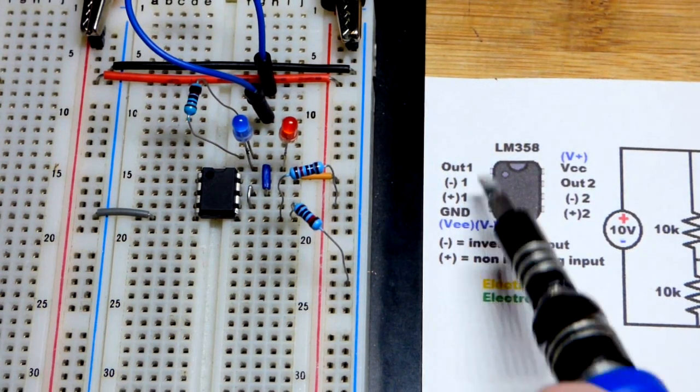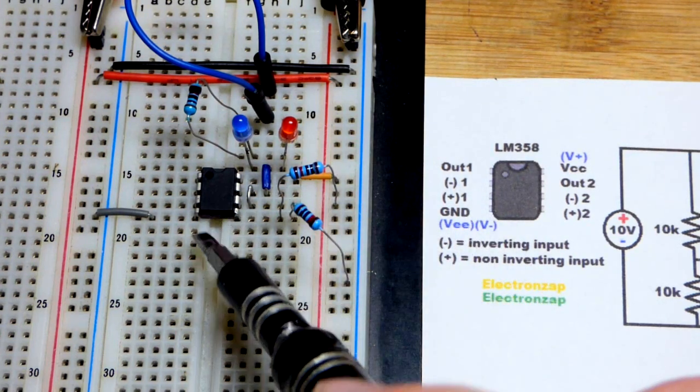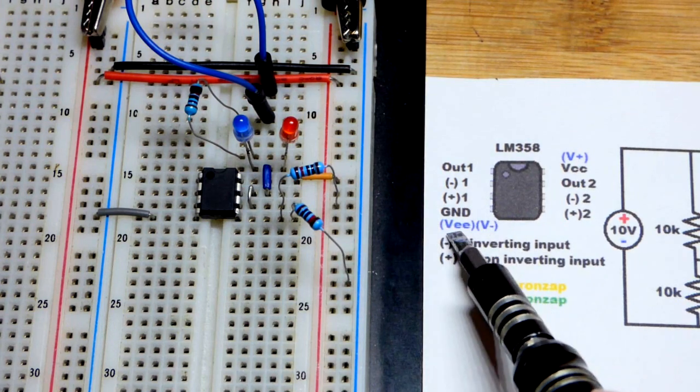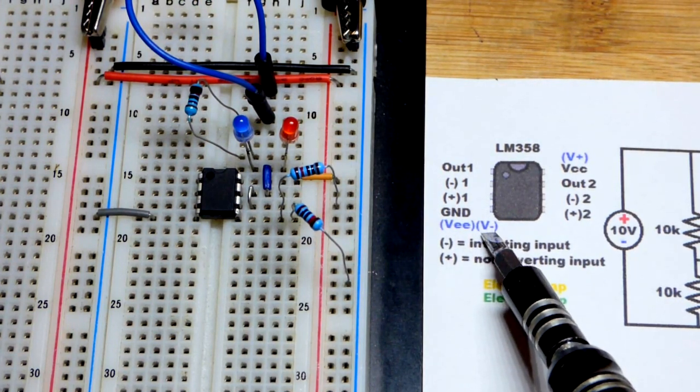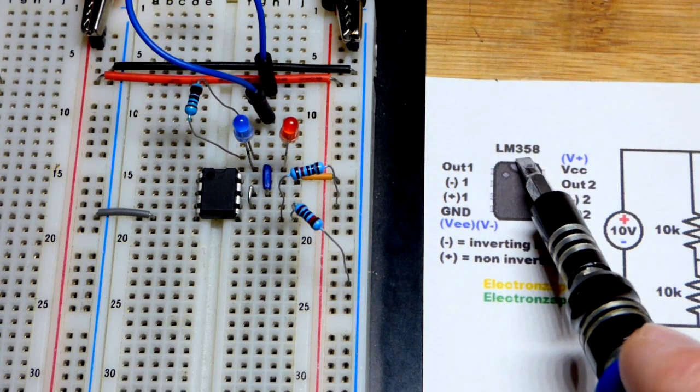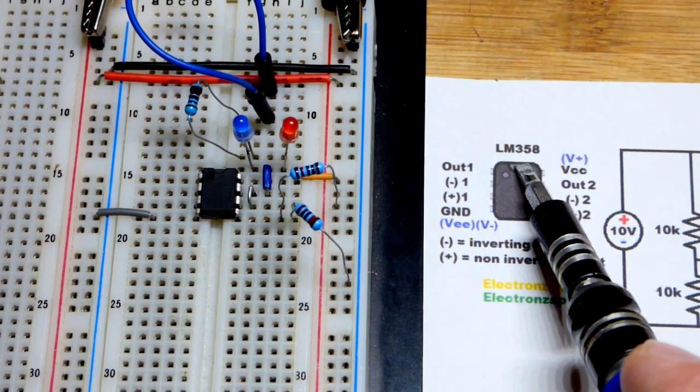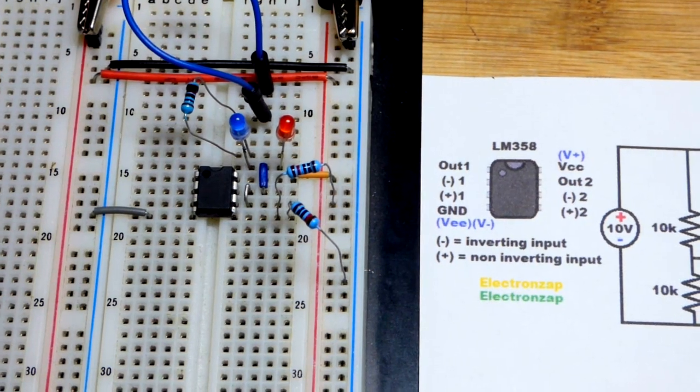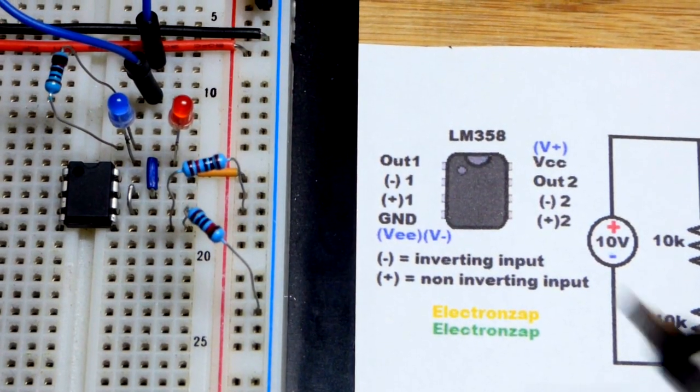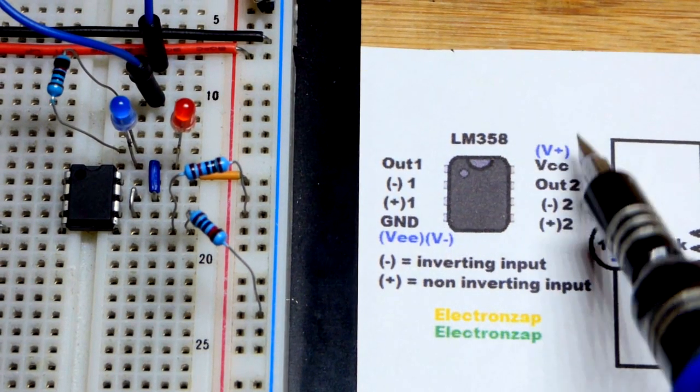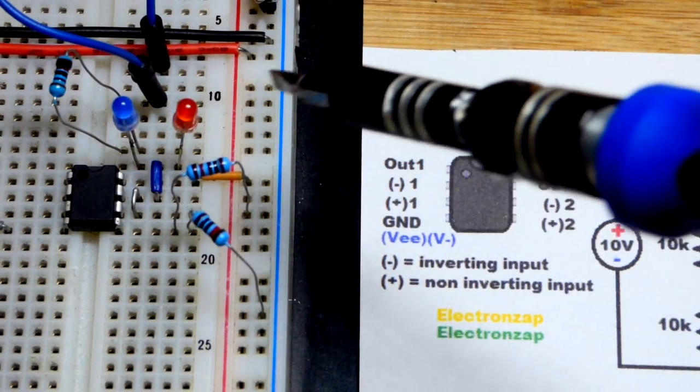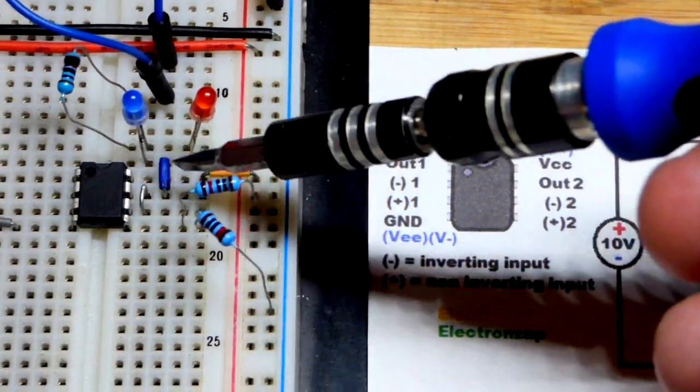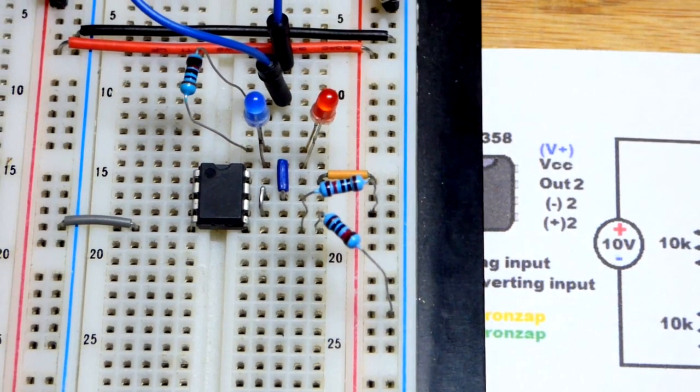So pin number 4 over here goes 1, 2, 3, 4. That is ground, depending on what data sheet you look at. Some say ground, some say VEE, some have a V- right there. So this LM358 is a single supply op-amp, but it's also used as a dual supply op-amp. Works perfectly fine as a dual supply op-amp. So each data sheet might show something different. That's why I added in blue what you might see. And then VCC is the positive side of the power supply, the V+ right there. And you can see we got that up to pin number 8 right there.